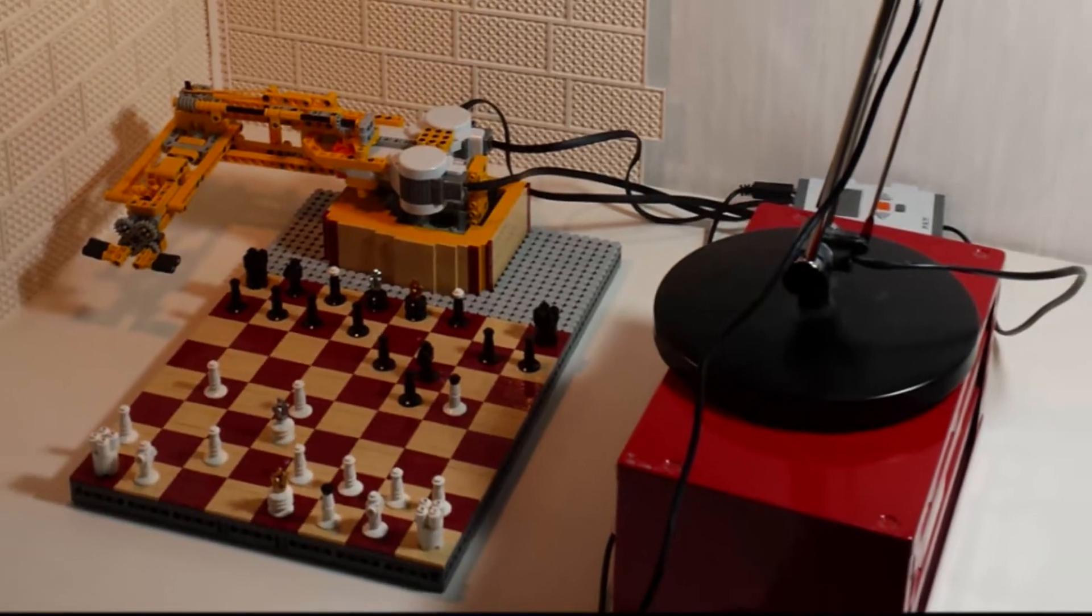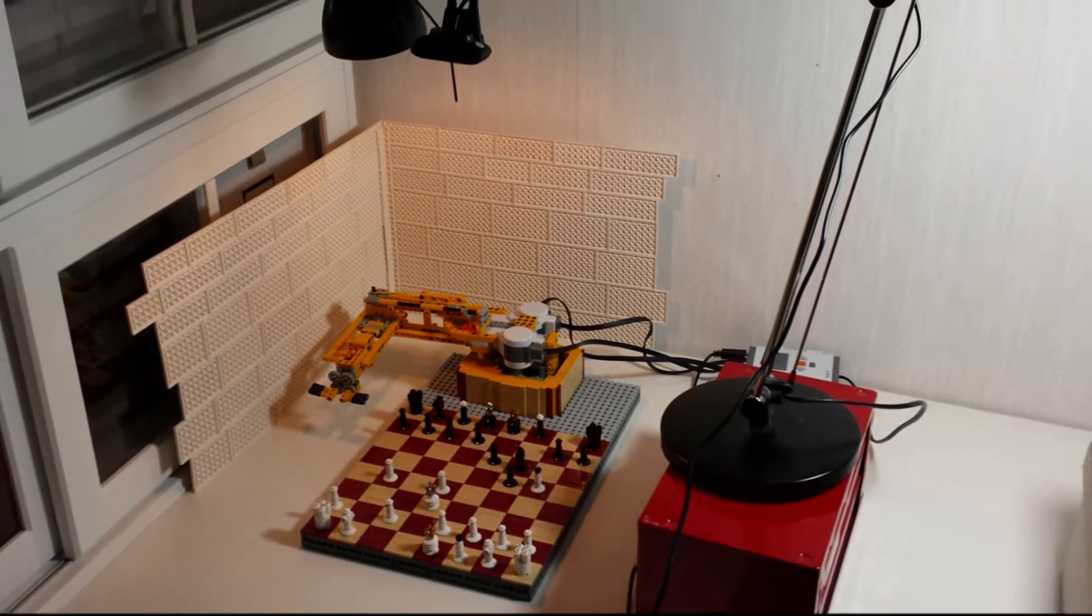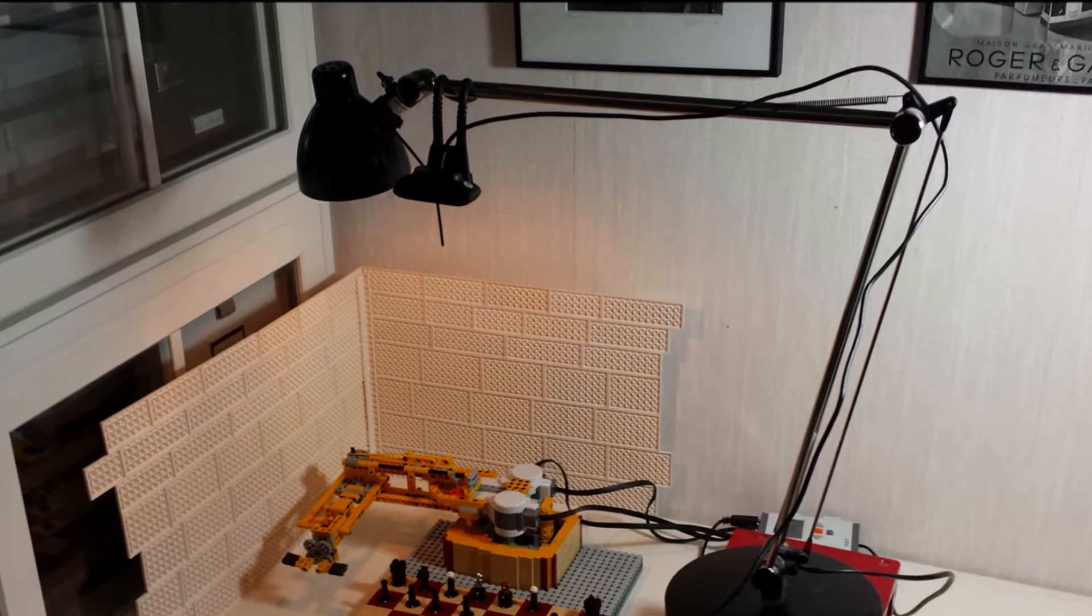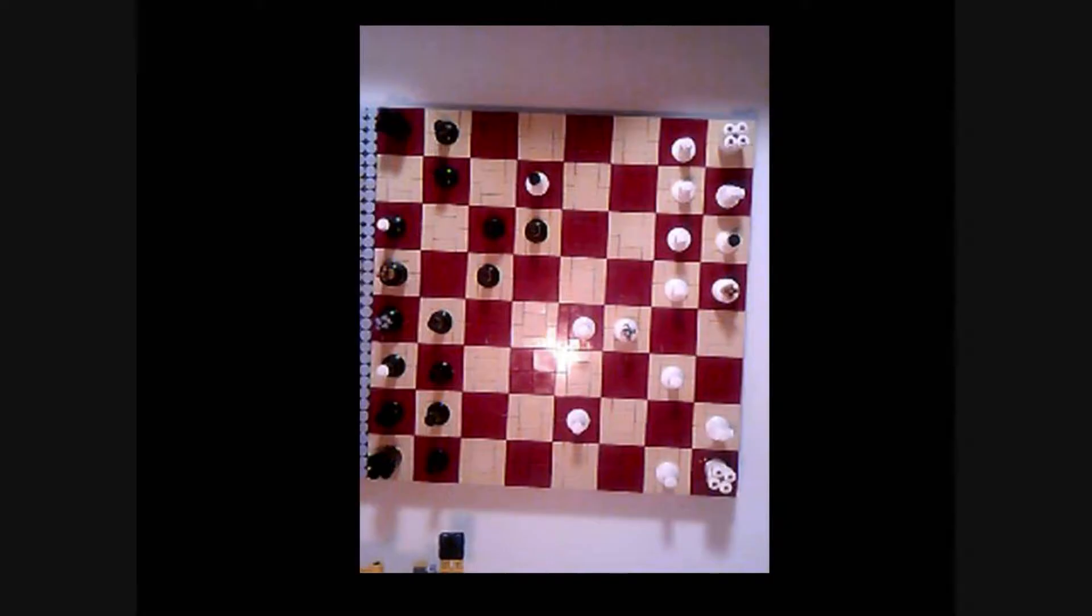With the game started we'll take a look at how Nona understands what move I'm making so that she can decide how to respond to it. Zooming out from the scene you can see that I got a desktop lamp lighting up the board. Mounted on this lamp there is a webcam. As soon as Nona has made a move she takes a picture of the board. Here's an example from a different game, the webcam doesn't quite align with the board but doesn't have to.